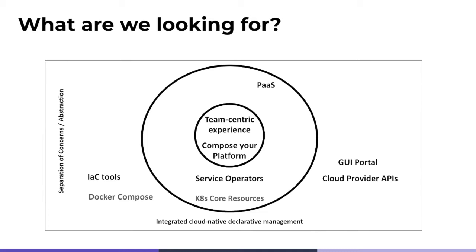What we've seen is that people want a more integrated, cloud-native, declarative management approach that mirrors what Kubernetes does for core resources like deployments and services. We've seen a set of service operators come onto the scene to bridge the low-level cloud service APIs into the Kubernetes API, effectively providing the assembly language of infrastructure into your Kubernetes environment. But there's still a lot of infrastructure details you have to be aware of in terms of how to stitch these resources together and make them secure.